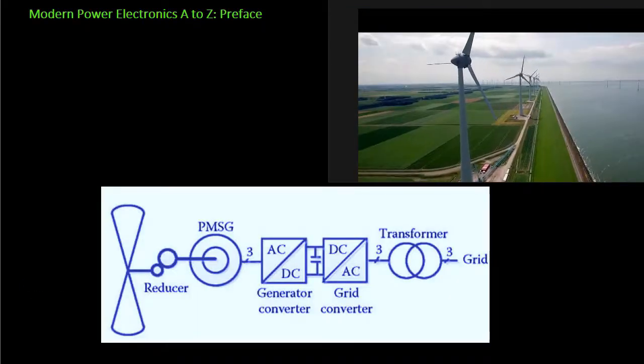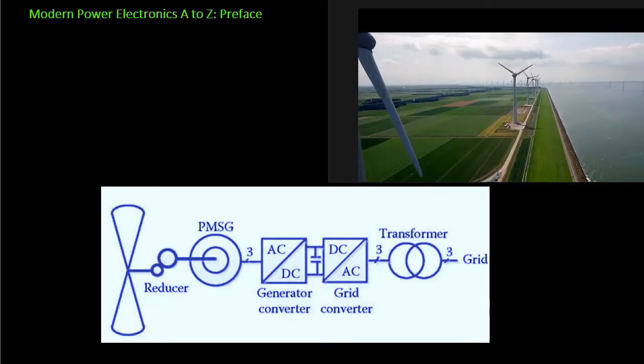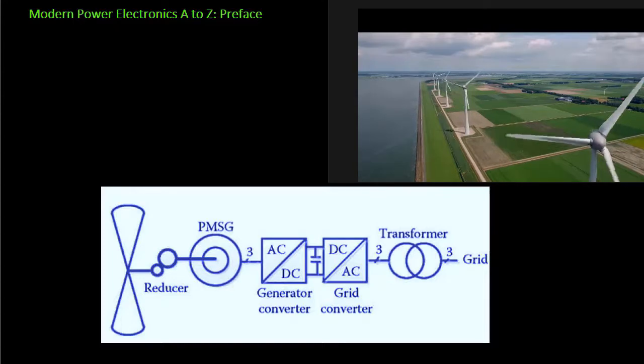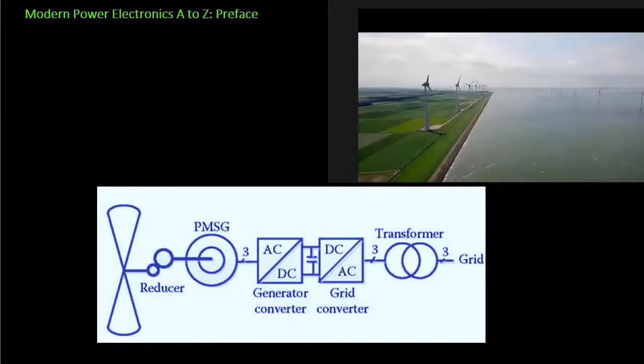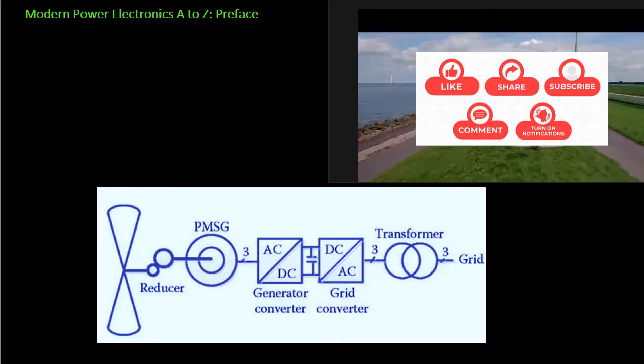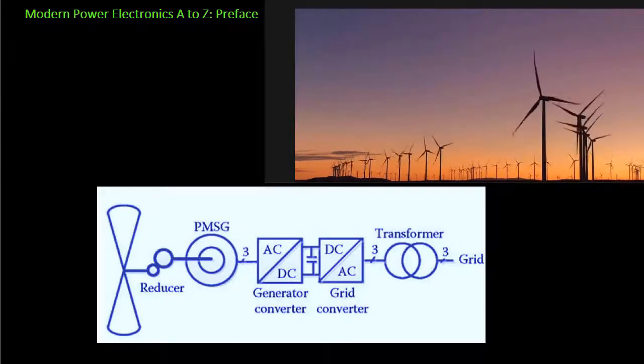Another example of power electronics is the connection of a variable speed wind turbine to the AC utility. The frequency and voltage of the AC produced by the electric generator vary with speed. In this application power electronics can be used to convert the variable AC to the fixed frequency and voltage required by the utility.